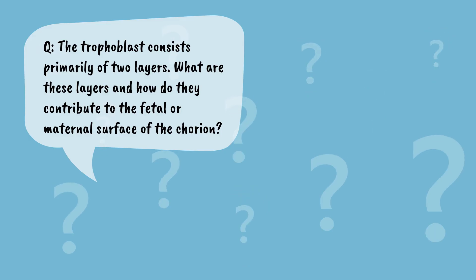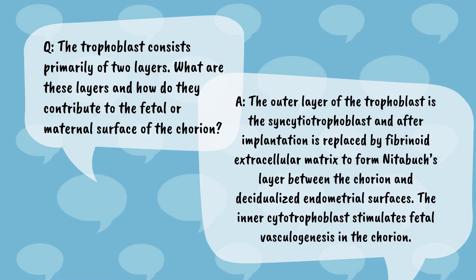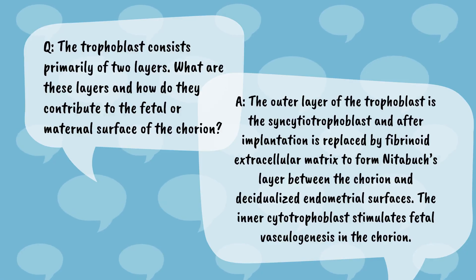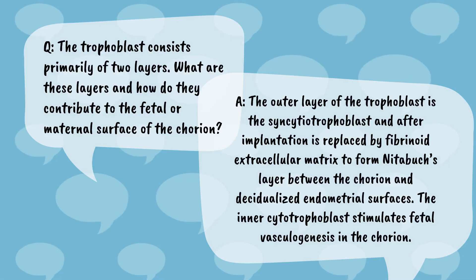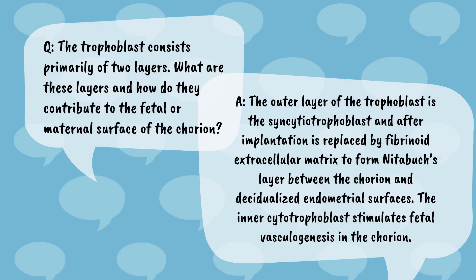Think fast! The trophoblast consists primarily of two layers. What are these layers, and how do they contribute to the fetal or maternal surface of the chorion? The outer layer of the trophoblast is the syncytiotrophoblast, and after implantation, is replaced by fibrinoid extracellular matrix to form Nitabuch's layer between the chorion and the decidualized endometrial surfaces. The inner cytotrophoblast stimulates fetal vasculogenesis in the chorion.